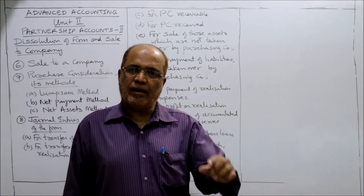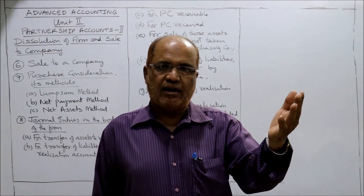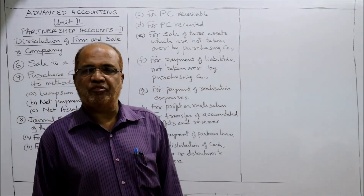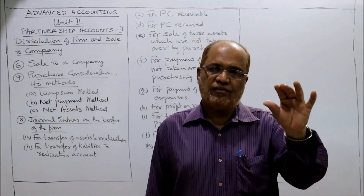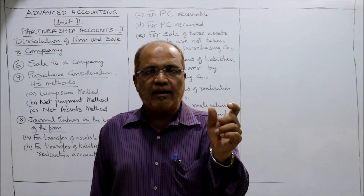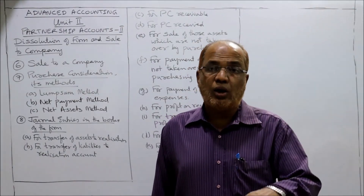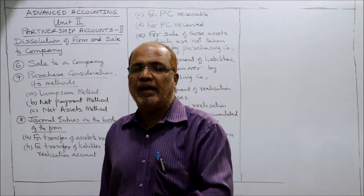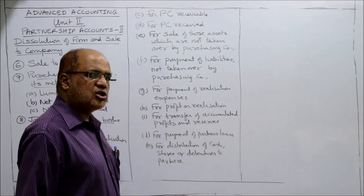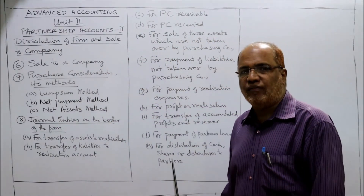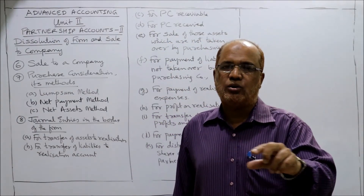Continuing the recap: for profit on realization — Realization Account debit to all Partners' Capital Account; for loss — all Partners' Capital Account debit to Realization. For accumulated profits: General Reserve / Reserve Fund / P&L Account debit to all Partners' Capital Account; for accumulated loss — all Partners' Capital Account debit to P&L Account. For partners' loan — Partners' Loan Account debit to Bank. For final settlement — Partners' Capital Account debit to Cash / Shares of Purchasing Company / Debentures of Purchasing Company.